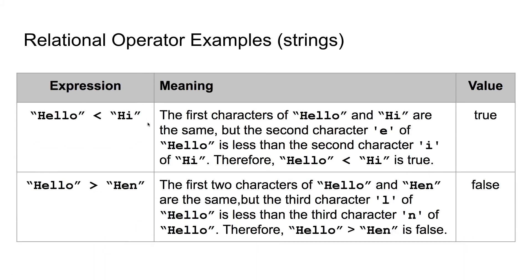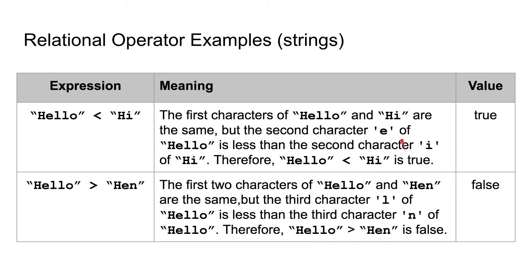Now let's look at relational operators used with strings. The first two strings we want to compare are "hello" and "hi". The first two characters of these strings are both capital H's, so we move on to the second character, which is E and I. E of "hello" is less than I of "hi", so this makes the statement true.